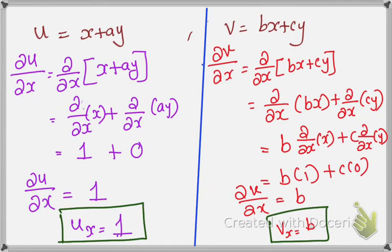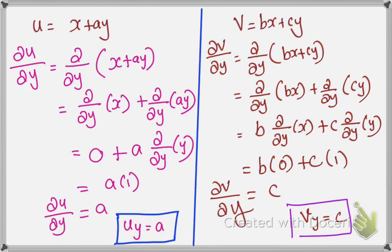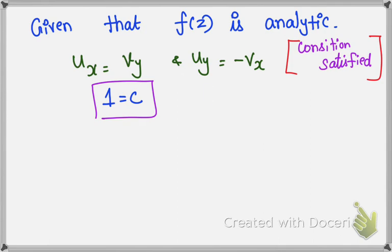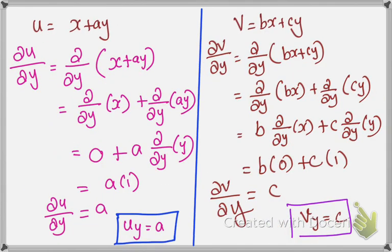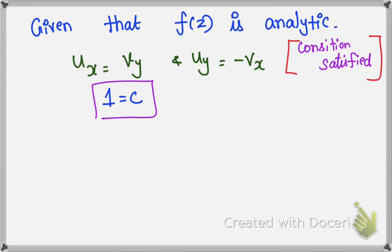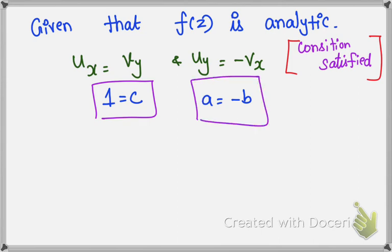Next, applying uy = minus vx: uy is equal to a, and vx is equal to b. So a = minus b. After comparing, we get the final answers: c = 1 and a = minus b.